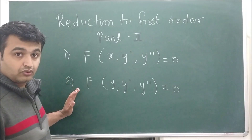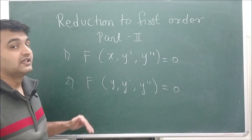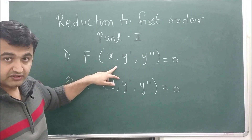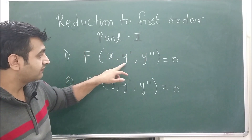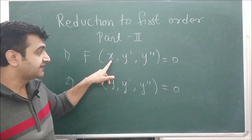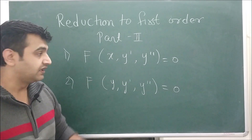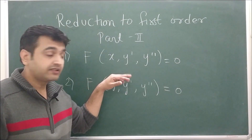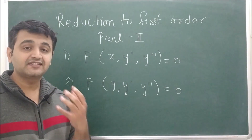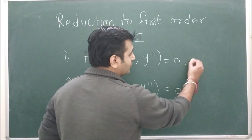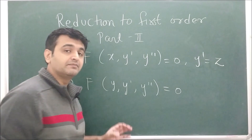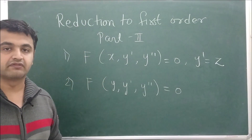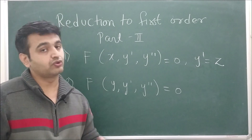Today we are going to see the remaining two families of differential equations where reduction of order will be used. The first one is when you have a differential equation involving x, y prime, and y double prime — where x is the independent variable and y depends on x. A simple substitution y prime equal to z converts this second order differential equation into a first order one.